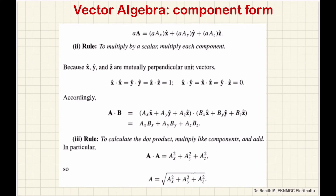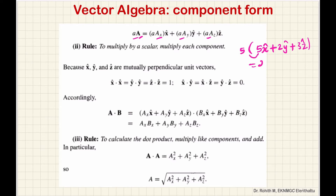Next, scalar multiplication using component formula. When you multiply a vector by a scalar, multiply each component. For example, 5 into (5x + 2y + 3z): 5 times 5 gives 25x, 5 times 2 gives 10y, 5 times 3 gives 15z. The rule: to multiply a scalar, multiply each component by the same scalar.